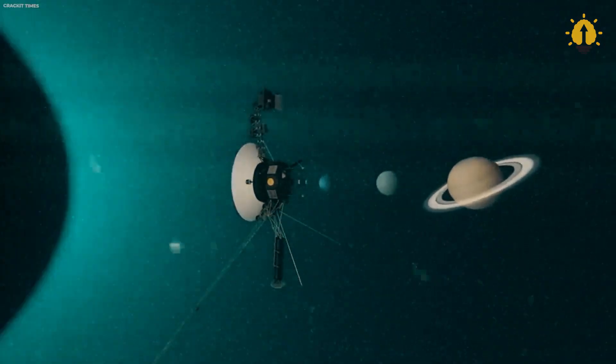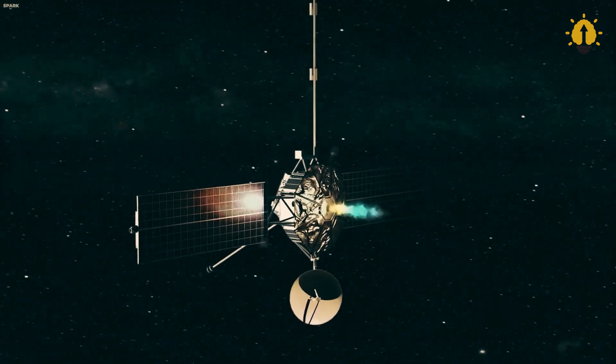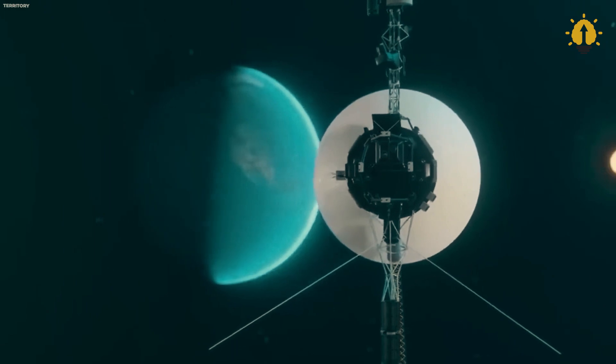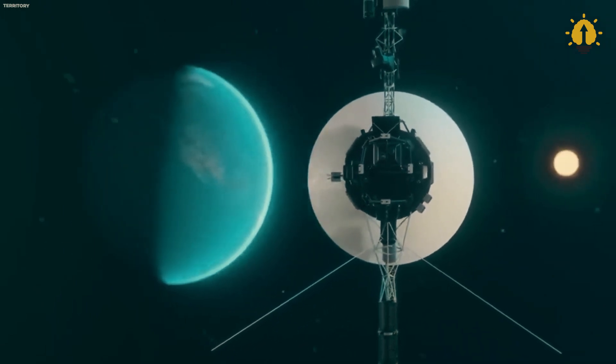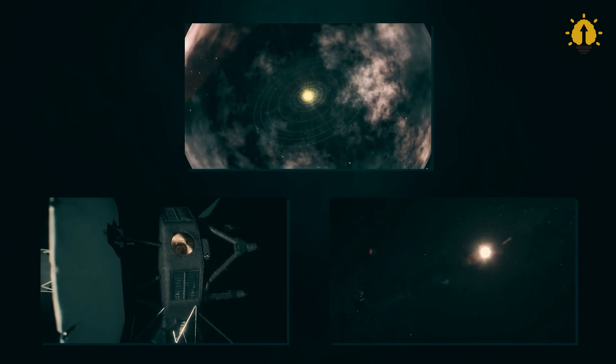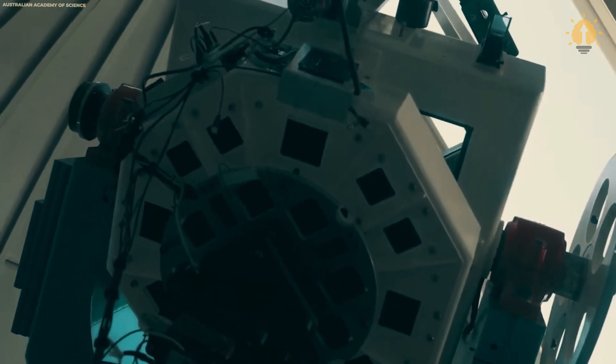However, Voyager 2 did not stay on Neptune but continued to the stars. You might wonder why it didn't stay put. Well, it all comes down to something called braking time.